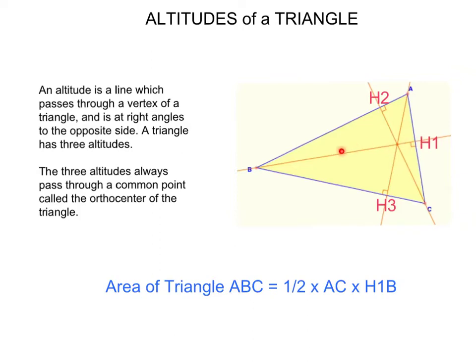We use the altitude of the triangle when we calculate the area of the triangle. In this case, area of triangle ABC is half the length of AC times the altitude H1B.